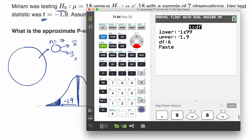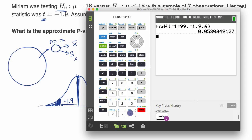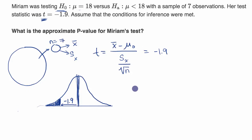And so there we have it. Our p-value would be approximately 0.053.